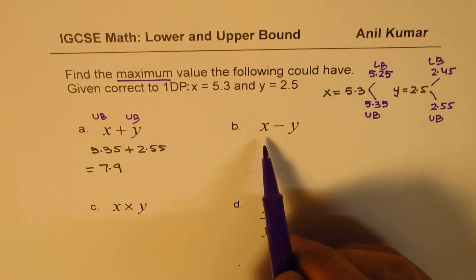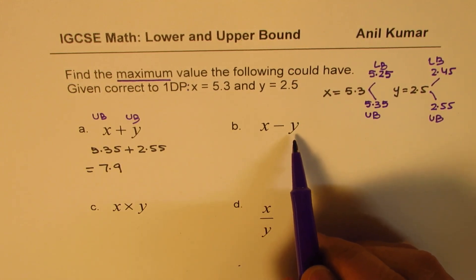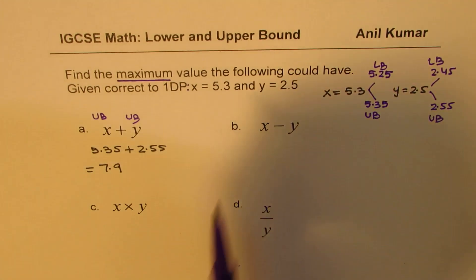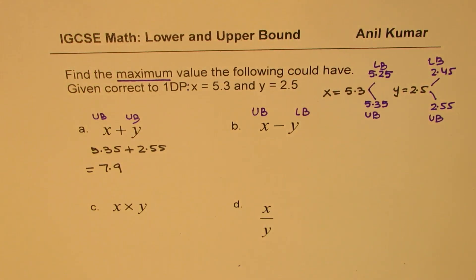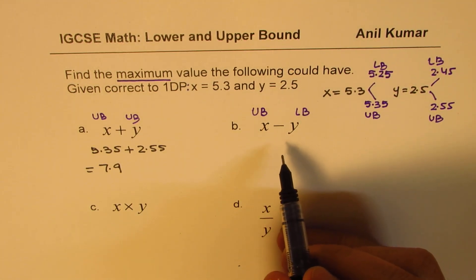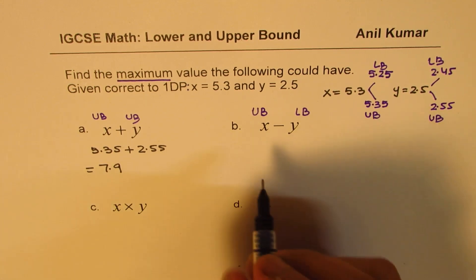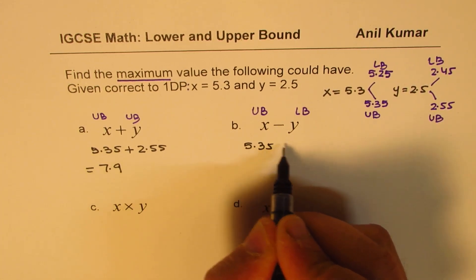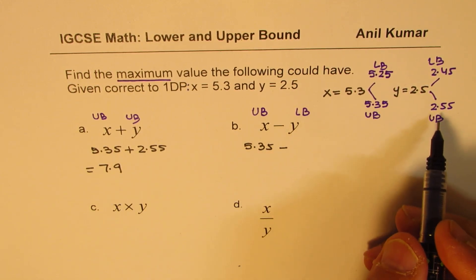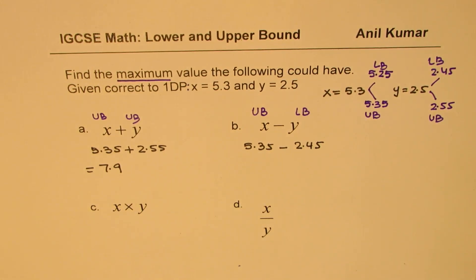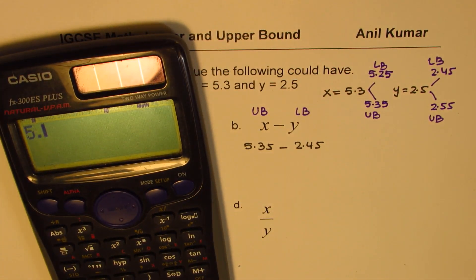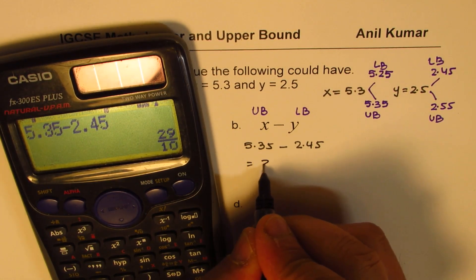Now think about this — you want the difference to be maximum. To get the maximum difference, this number should be taken as the upper bound and the other number as the lower bound. So in calculations, you have to apply logic. For X, we take 5.35 and subtract the lower bound value of Y, which is 2.45. So 5.35 take away 2.45 gives you 2.9 as the maximum value of the difference.